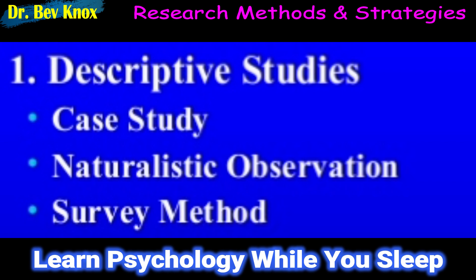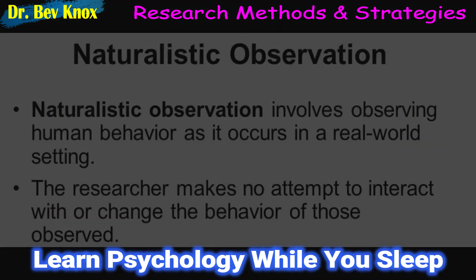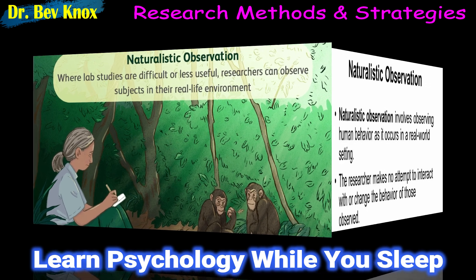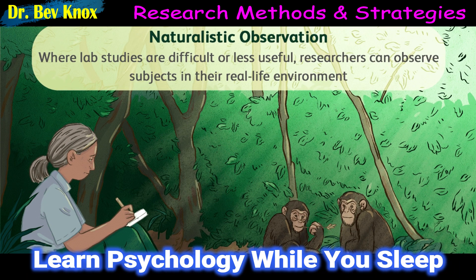Let us begin by considering several types of descriptive research design to systematically investigate a person, group, or patterns of behavior. These methods include naturalistic observation, survey research, and case studies. In naturalistic observation, the investigator observes some naturally occurring behavior and does not make a change in the situation at all. The important point to remember about naturalistic observation is that the researcher simply records what occurs, making no modifications in the situation.